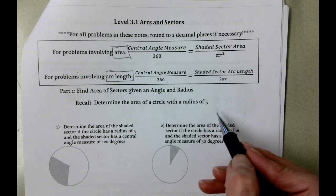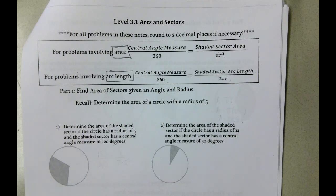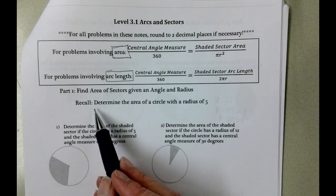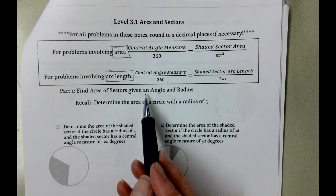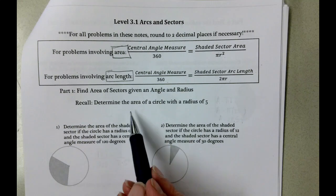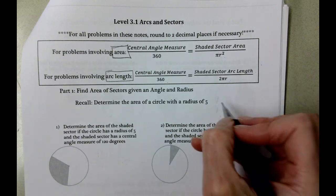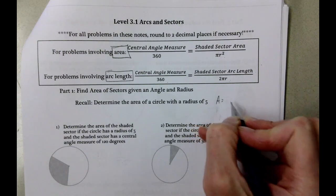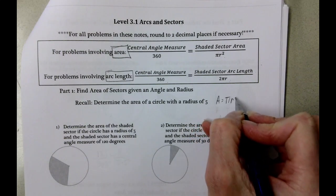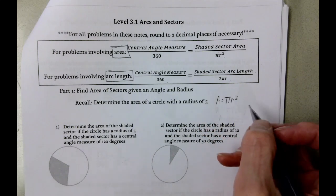So maybe to make this a little bit shorter, we can start here before we find the area of sectors given an angle and a radius. Determine the area of the circle with radius of 5. So once again, our formula for area is πr², you will be provided with that formula.